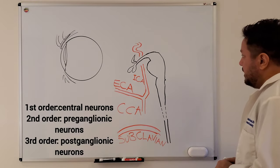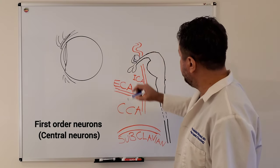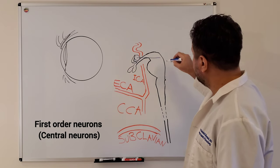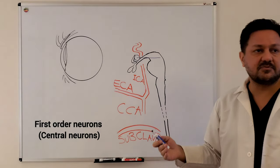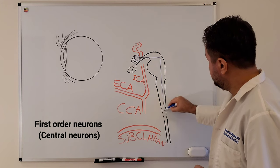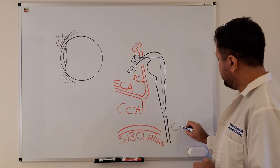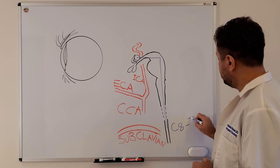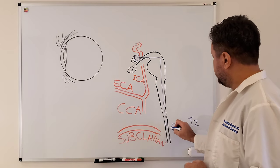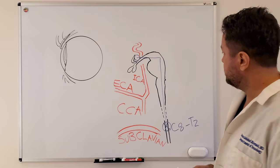The first order neuron starts in the hypothalamus, and neurons will travel through the lateral aspects of the brainstem all the way down to the spinal cord at the level of the lower C spine, around C8 to about T2, so upper thoracic spine. And there we're going to have our first synapse.